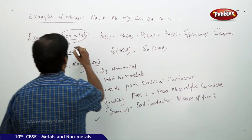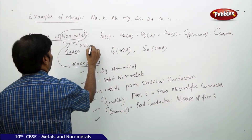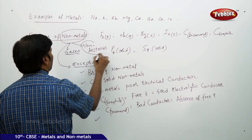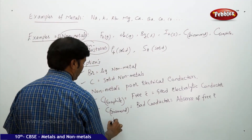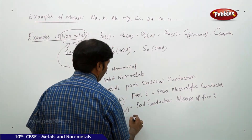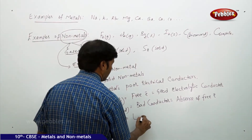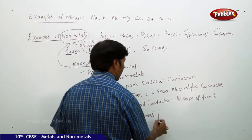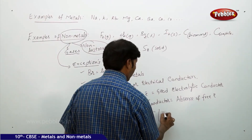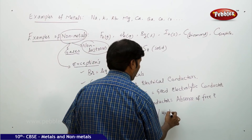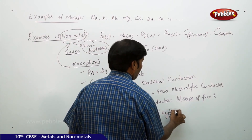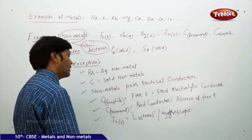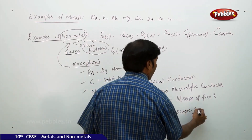In general, all non-metals are non-lustrous. But again, iodine is an exception — iodine solid is lustrous. It is also hygroscopic, and sometimes it can be called a sublime solid.